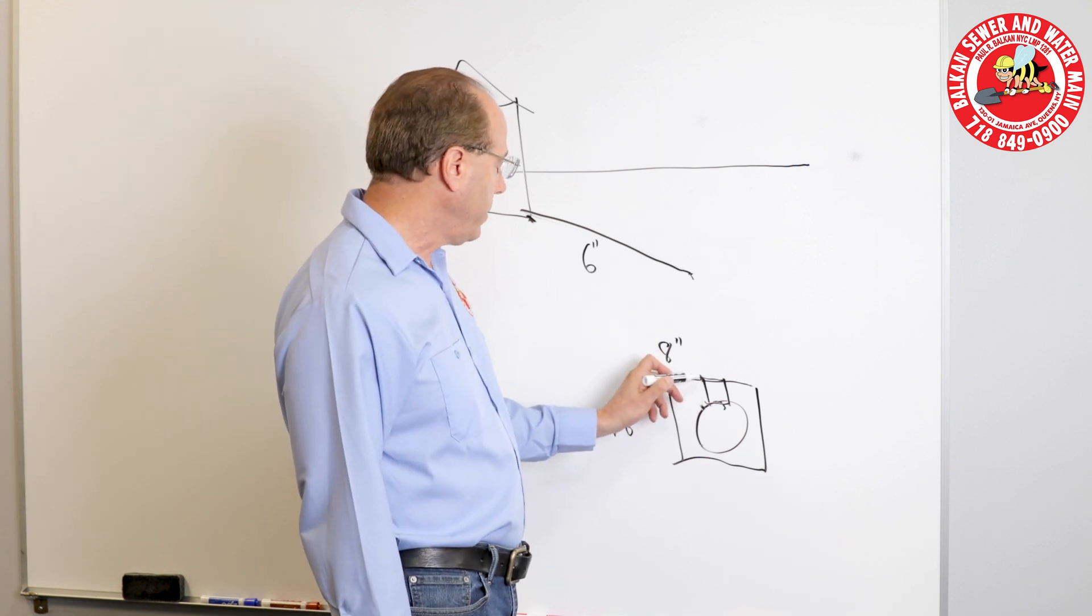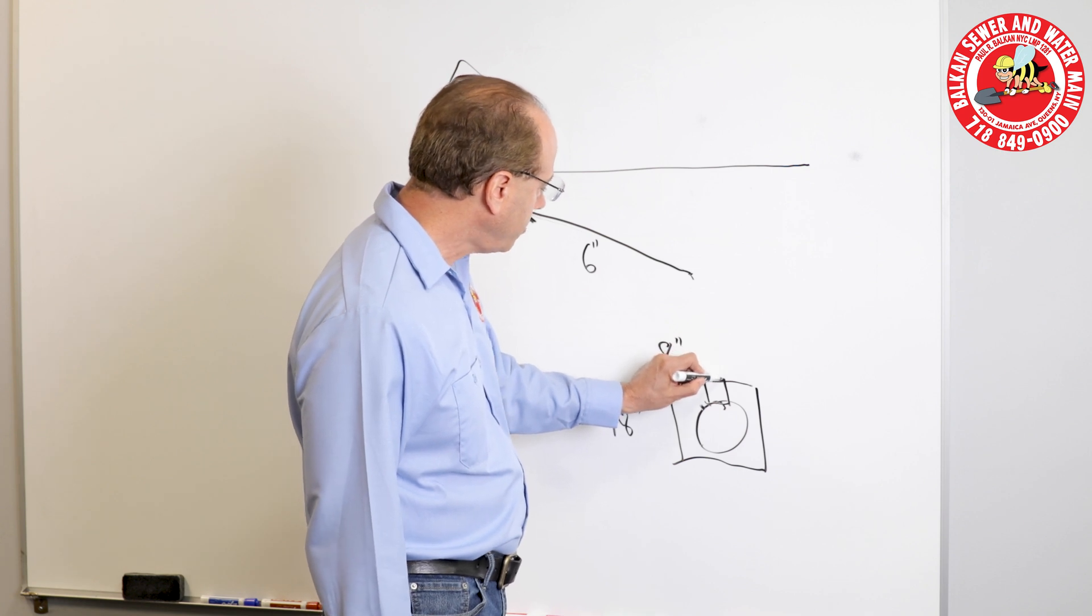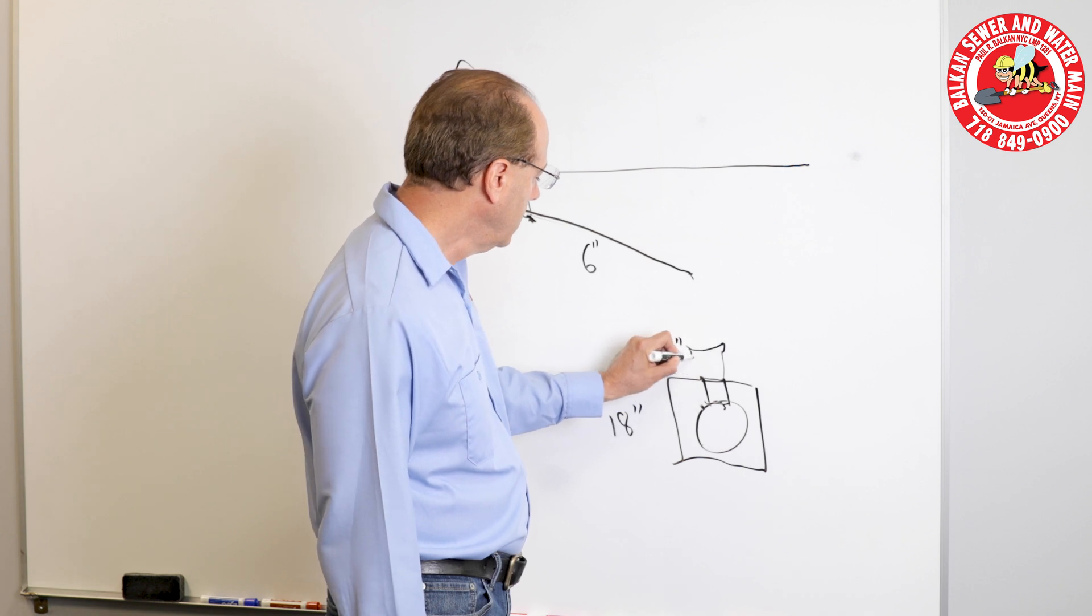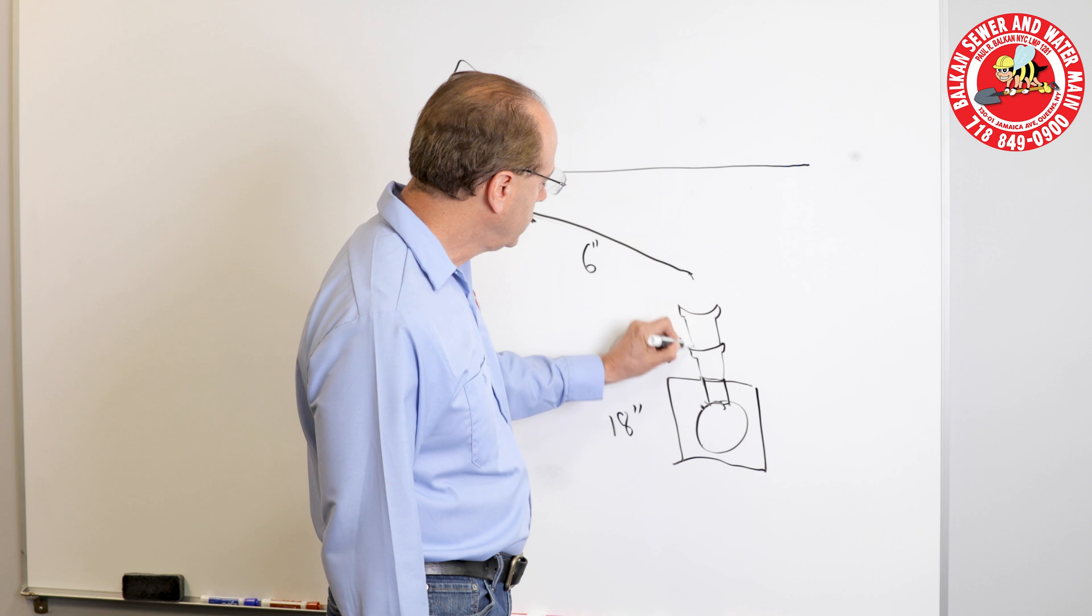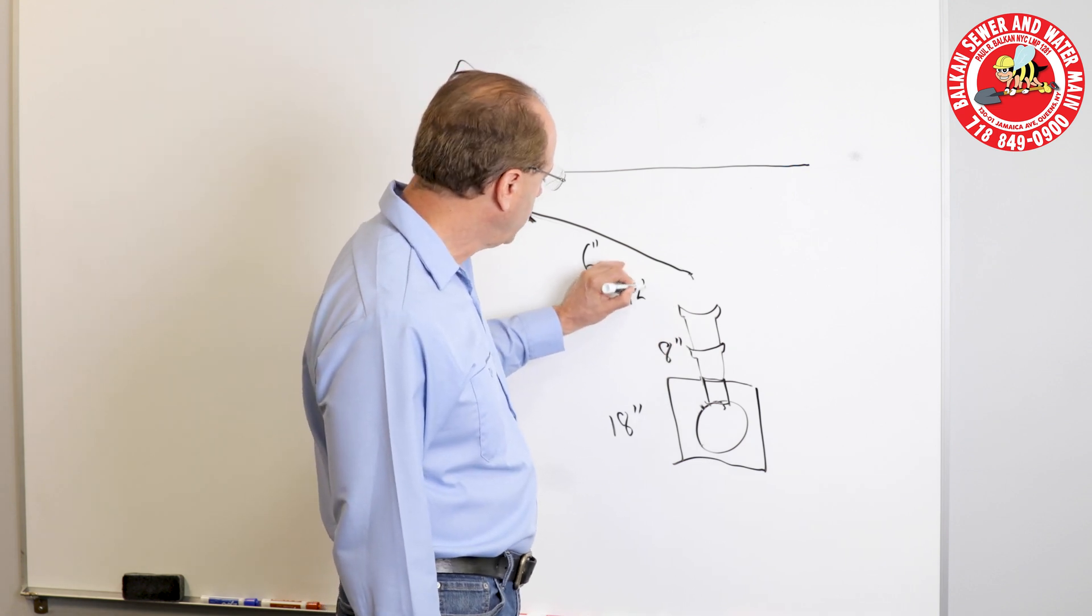So after the core drill penetration is made, then your pipe is added in sections to the elevation that meets code, which is typically about 12 feet deep.